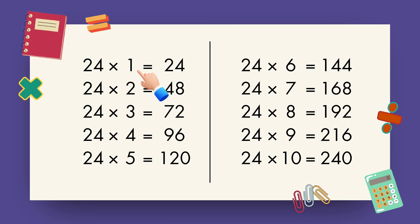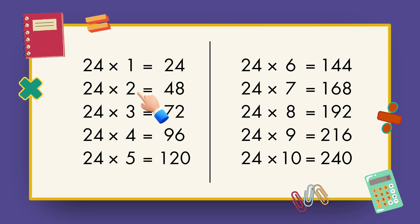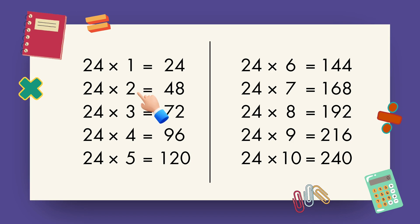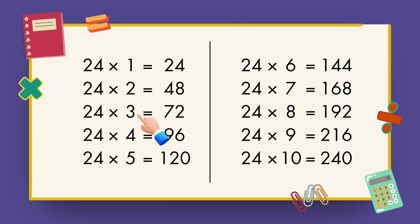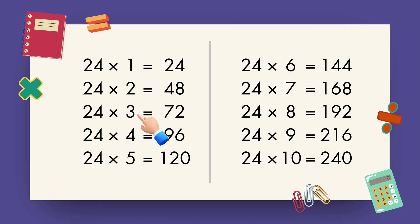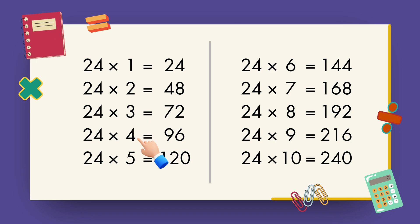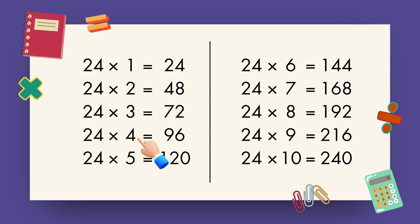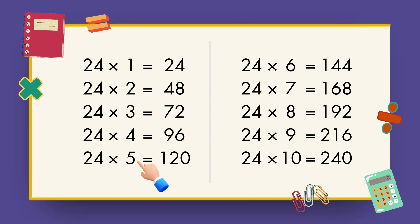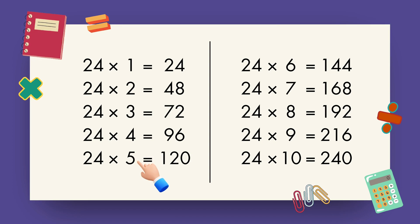24 ones are 24, 24 twos are 48, 24 threes are 72, 24 fours are 96, 24 fives are 120.